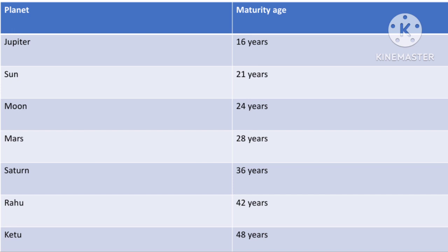The maturity age of Venus (Shukra) is 25 years. When you become 25, you start thinking about relationships — this is the age when you should be mature enough to deal with relationships in your work life, at home, and in finding a right partner. Venus matures at 25, meaning you become best capable of dealing with Venus's energy and should handle relationships maturely rather than behaving like a childish person.